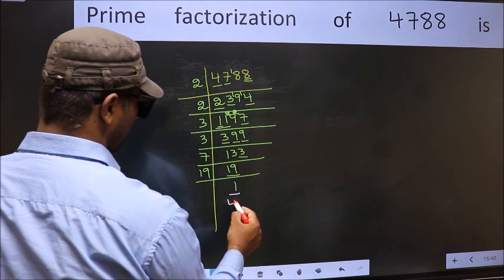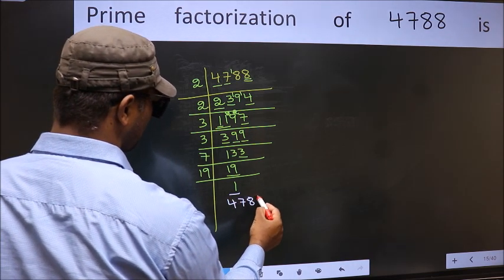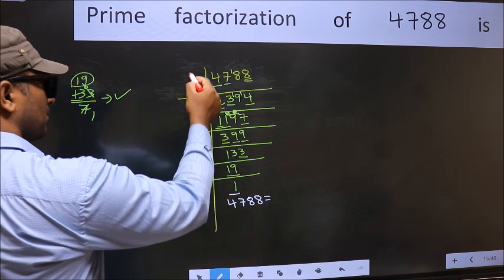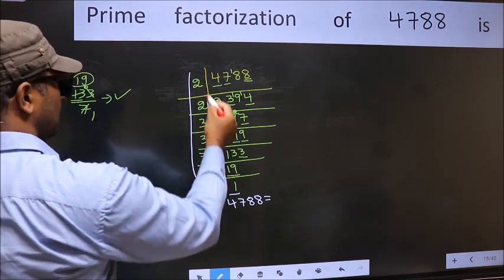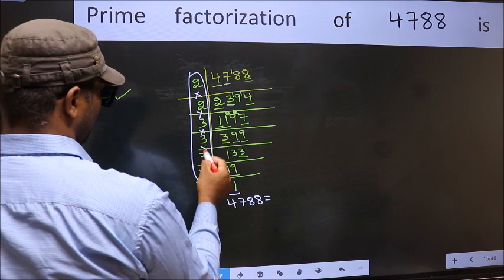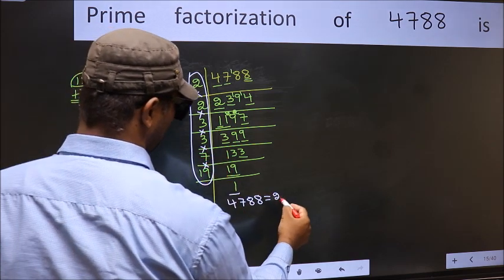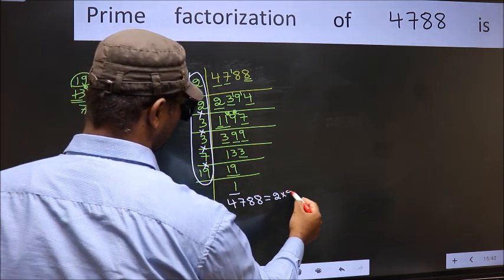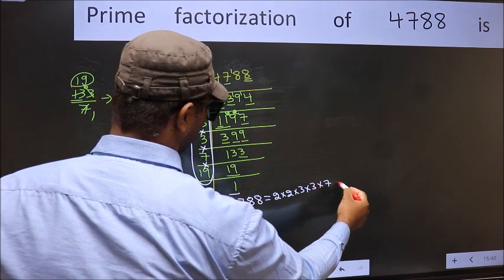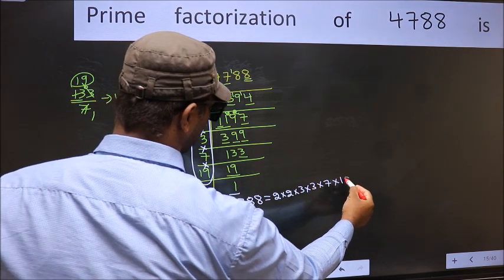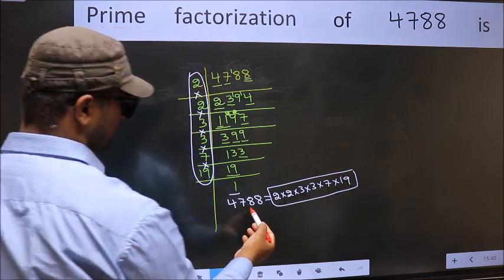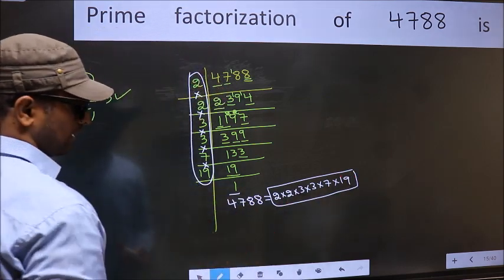So the prime factorization of 4788 is the product of these numbers, that is 2 into 2 into 3 into 3 into 7 into 19. This is the prime factorization of 4788.